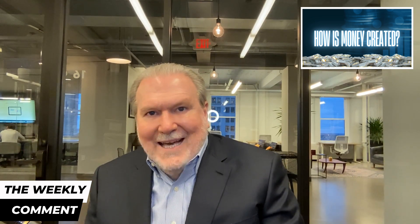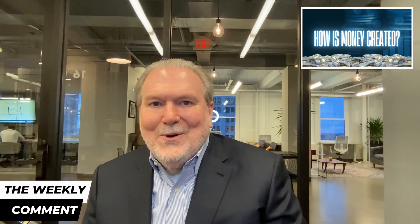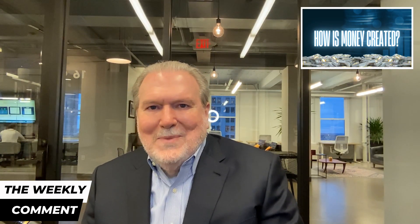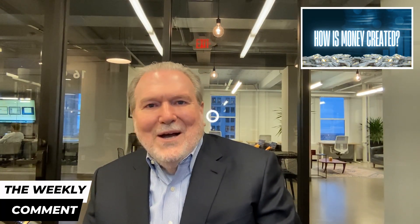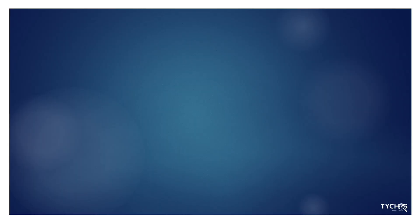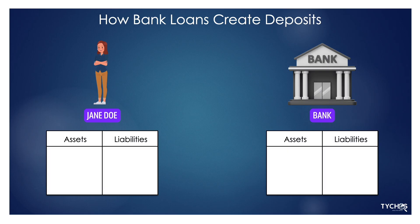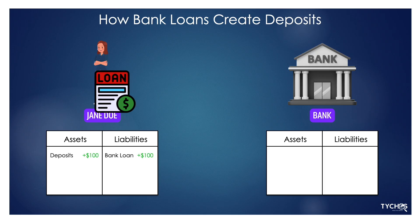There's a common misunderstanding that banks take in deposits and then lend those funds out to other borrowers. That isn't how modern banking works. When a bank makes a loan, it doesn't pull money from someone else's account. Instead, the bank creates a brand-new deposit essentially out of thin air at the same moment it books the loan, by simply making an electronic credit to the borrower's checking account. On the bank's balance sheet, the loan is recorded as an asset and the borrower's deposit as a liability. That new deposit is new money injected into the economy.